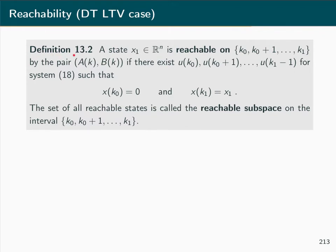Definition 13.2 defines that the state x1 is called reachable on a given discrete time interval by the pair (A, B) if there exists a sequence of control inputs u(k0) through u(k1-1) such that it is possible to steer the state of the system to x1 at time k1, starting at the origin at time k0. The set of all reachable states is called the reachable subspace of the system on the given discrete time interval.